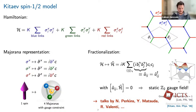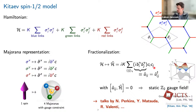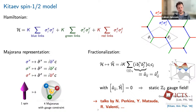The ground state is a Z2 spin liquid, and the spectrum consists of itinerant Majorana fermions — the c fermions — hopping in the background of the static Z2 gauge field, which features the usual Dirac dispersion on the honeycomb lattice. Now we want to add perturbations to look for a quantum critical point towards some ordered phase.